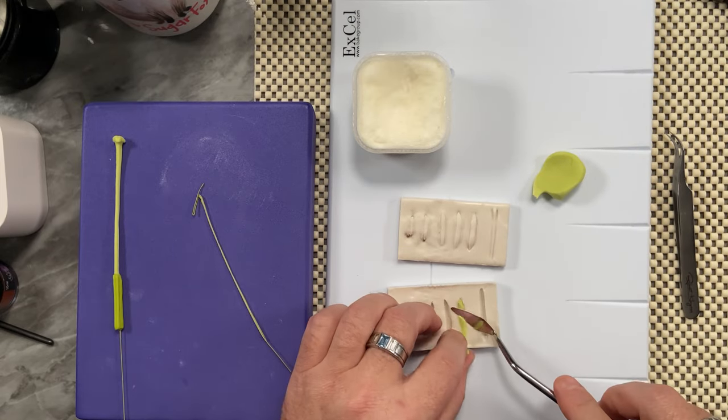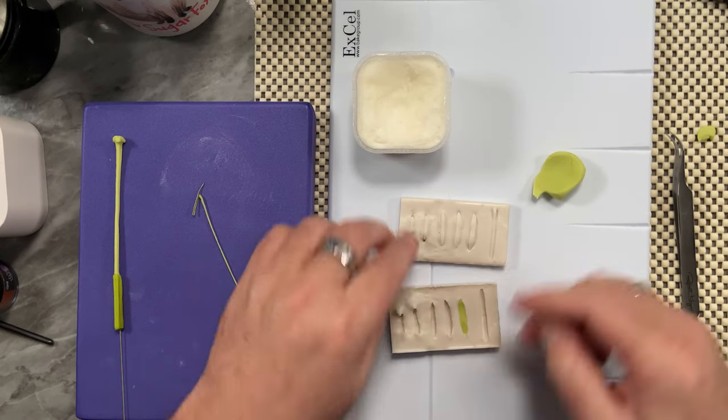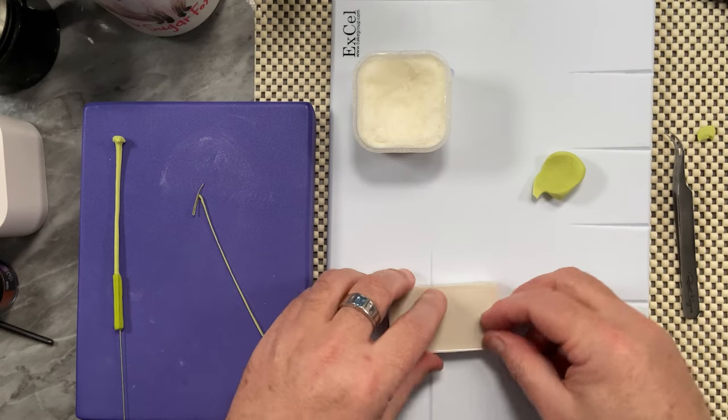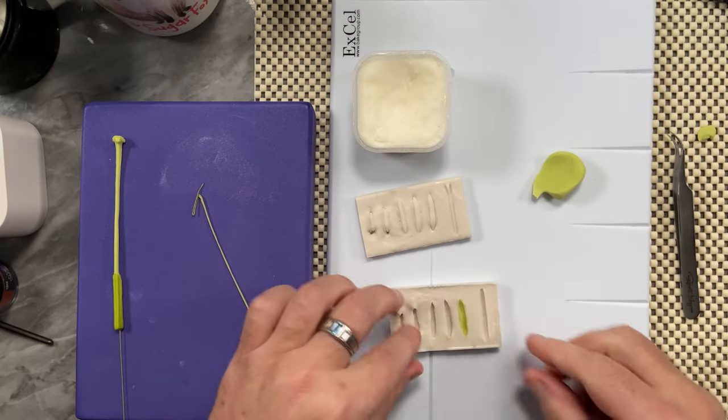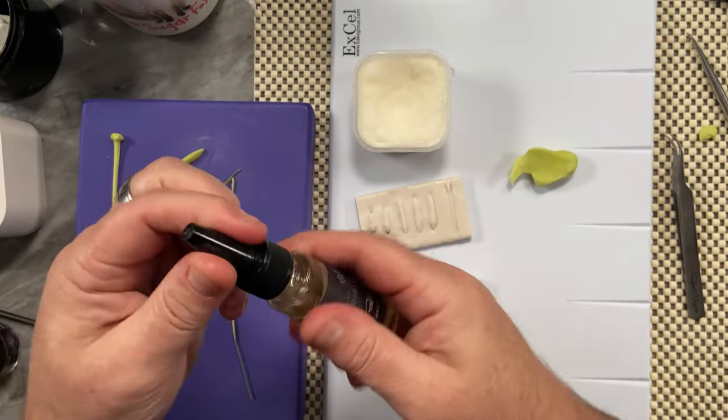Just taking the excess off, place this on top, and that will give you a really nice stamen. I will take some of my glue.